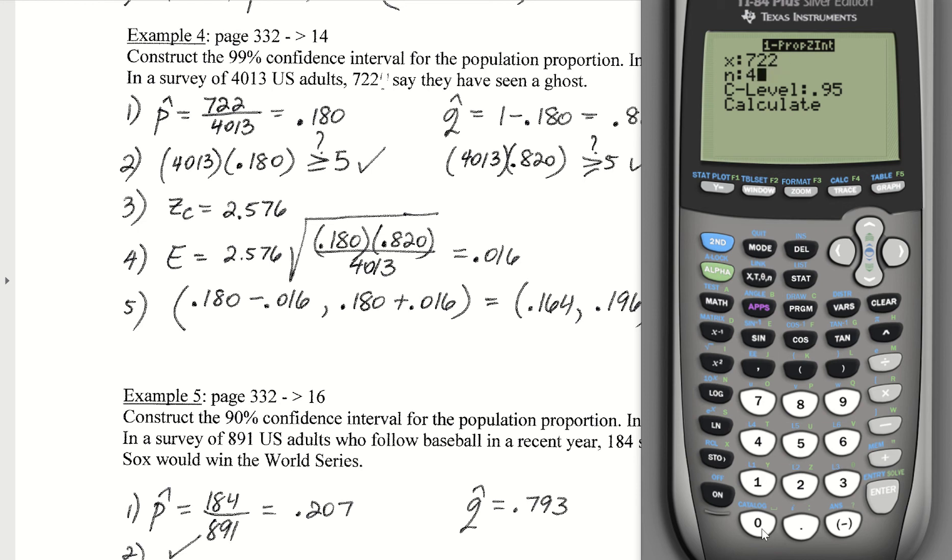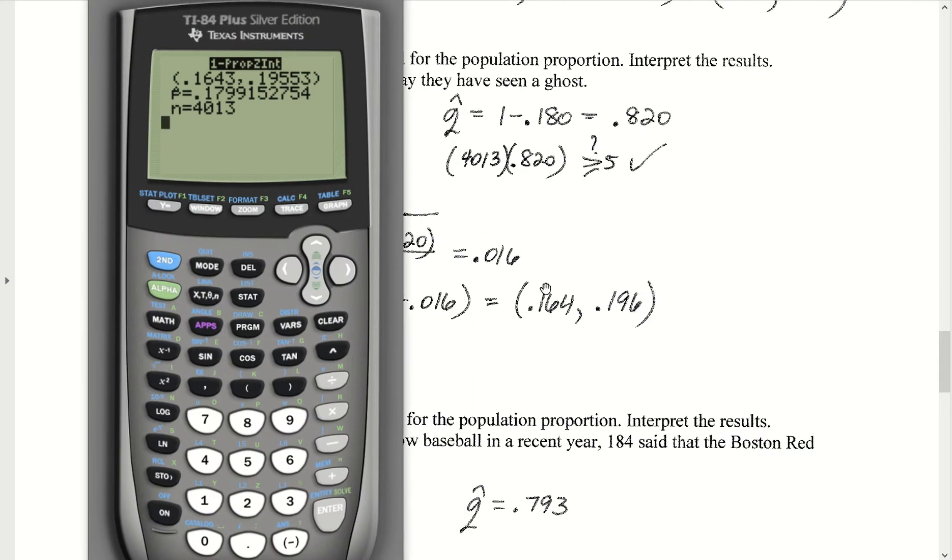My sample size was 4,013. And for this problem, we wanted to do a 99% confidence interval. Go ahead and hit enter. And our confidence interval produces, to three places, 0.164 to 0.196. I would round up to six.